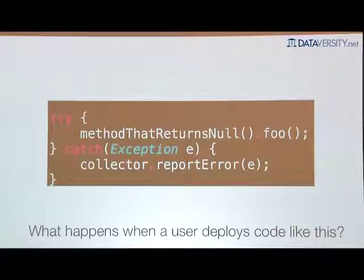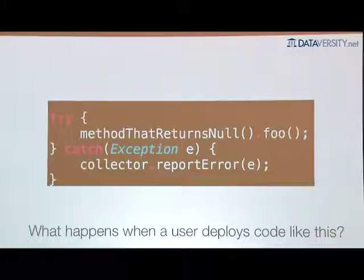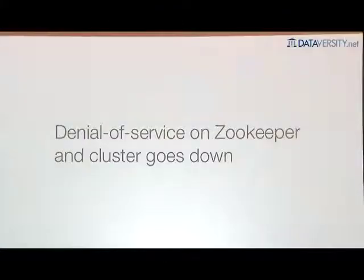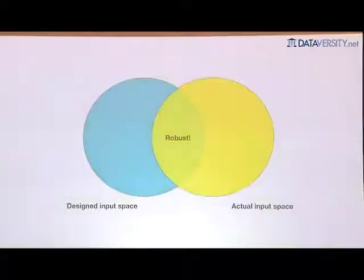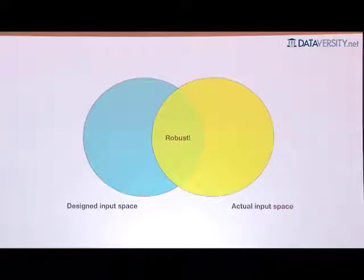It turns out there were some serious problems with this design. One of our users at Twitter deployed code that, for every input tuple, throws a null pointer exception and then calls report error on it. So report error was being called once for every input tuple — 100,000 times per second — which caused a denial of service attack on ZooKeeper and brought the entire cluster down, killing everyone's topologies. What went wrong was a mismatch between how we expected the method to be used and how it was actually used — the input space we designed for was different than what we saw in production.